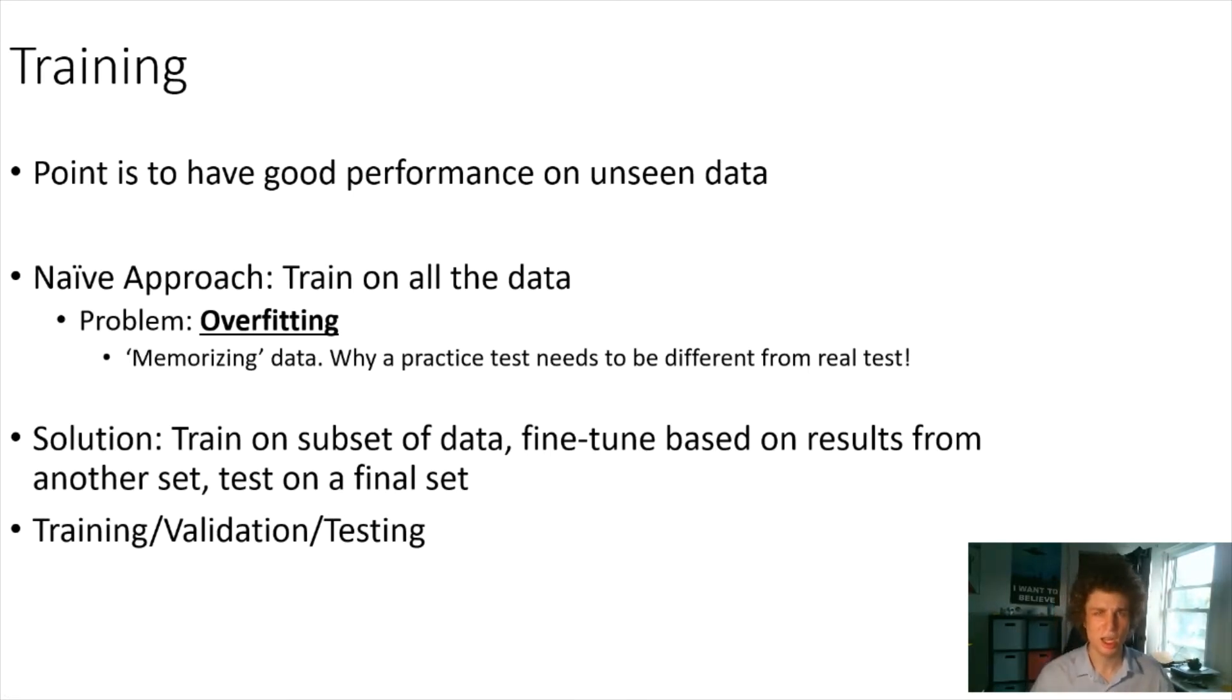It's essentially this idea of memorizing data. These models that are super powerful can literally just memorize the input data. If you keep feeding it the same information to train it, your model can just memorize that exact input and always give that same output. The issue is if you're trying to evaluate your model, you're biasing your model's result. It's not telling you how good it would be at applying to unseen data, only how good it is on data it's seen before.